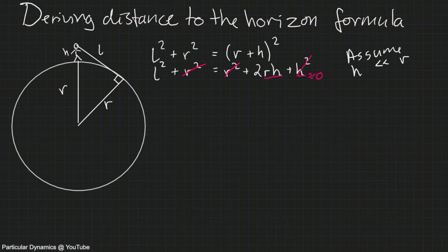Okay, so we change our equal sign to an approximation. Remember that, and rewriting what we have found so far, we get that l squared is approximately equal to 2rh.